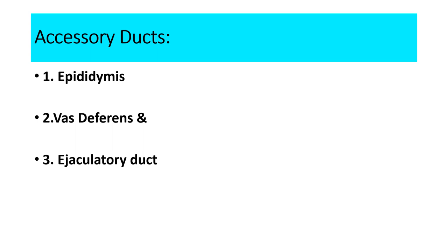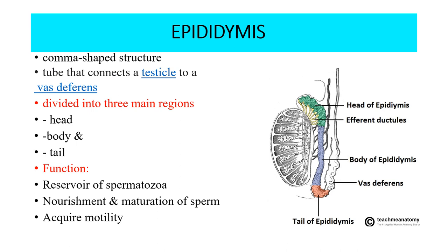Accessory ducts include the epididymis, vas deferens, and ejaculatory ducts. Sperms are formed in seminiferous tubules and then empty into the epididymis, which is a coiled tube about 6 meters in length and comma-shaped, connecting the testis to the vas deferens. It is divided into three regions: head, body, and tail. The head stores sperm for maturation; the body is highly convoluted and is where sperm matures; and the tail is continuous with the vas deferens. Main functions of the epididymis are: acting as a reservoir for spermatozoa, providing nourishment and maturation of sperm, and sperm acquires its motility in the epididymis.